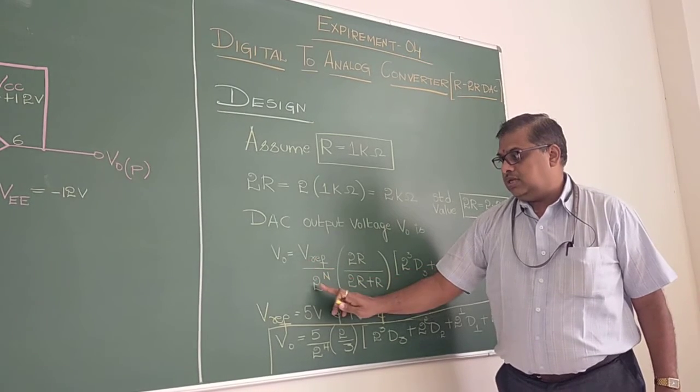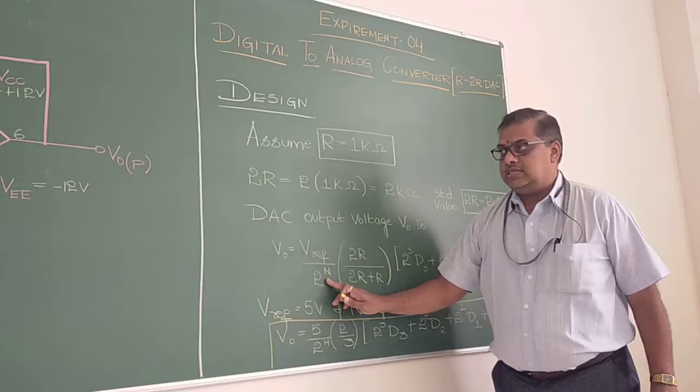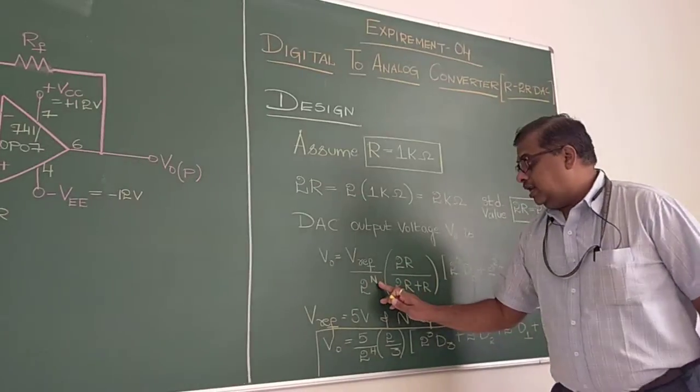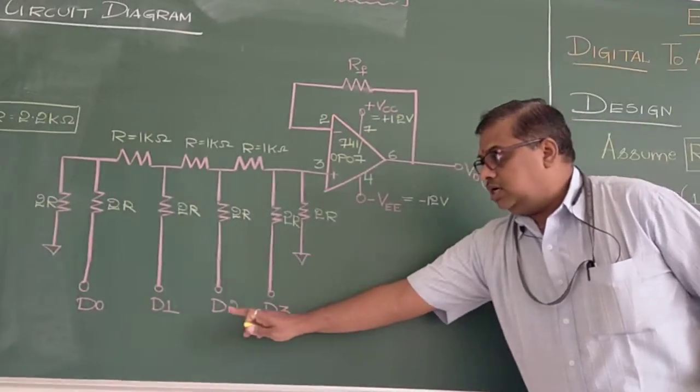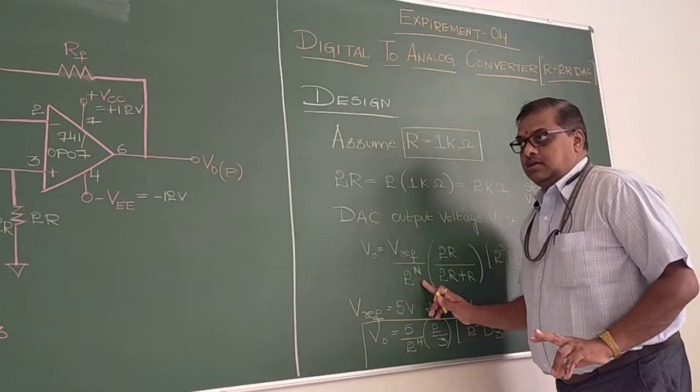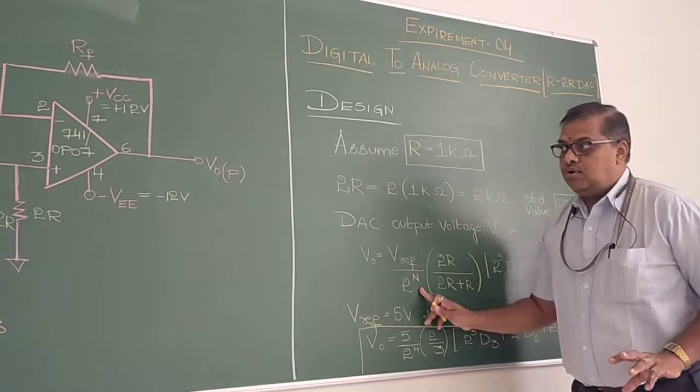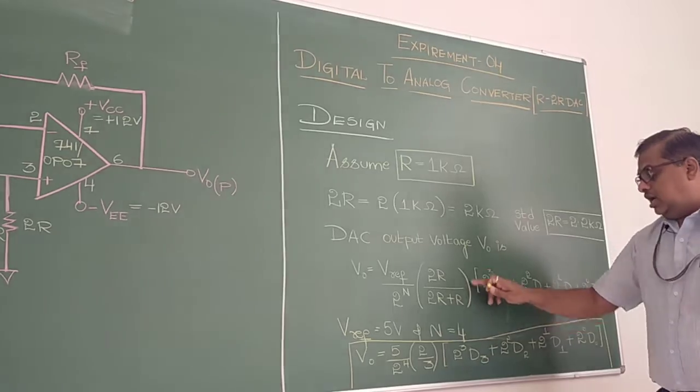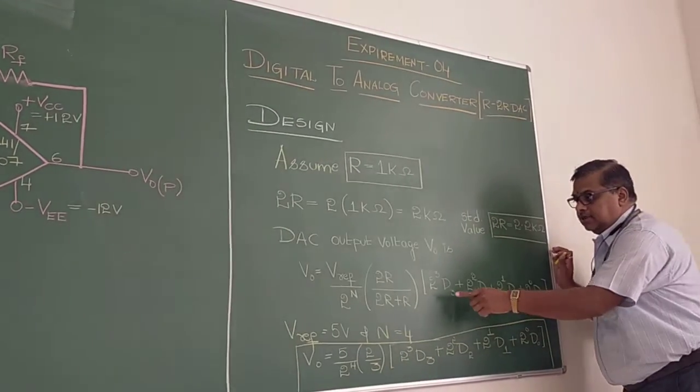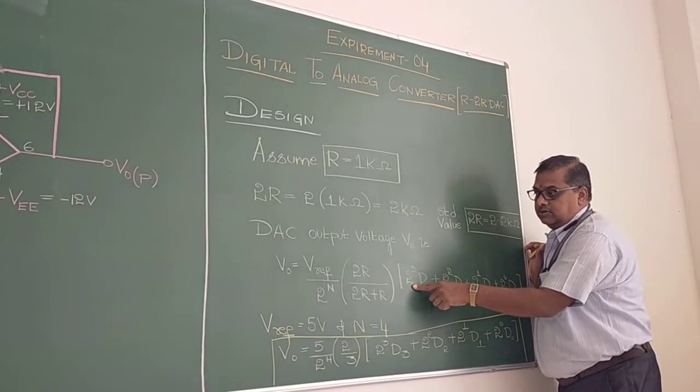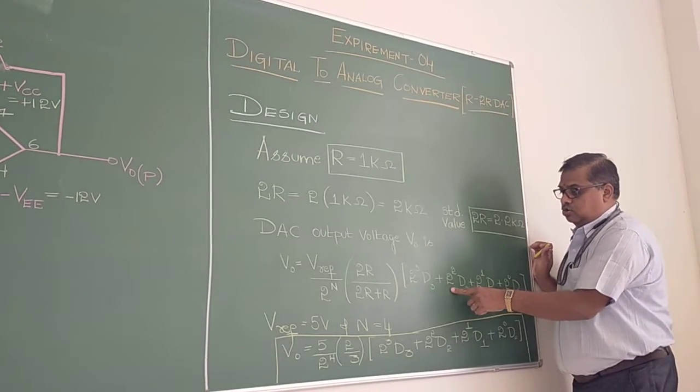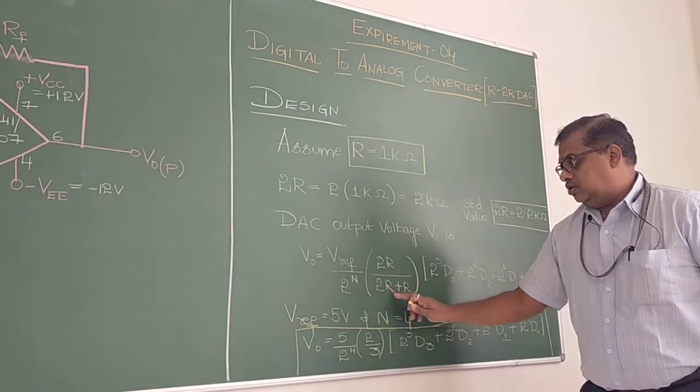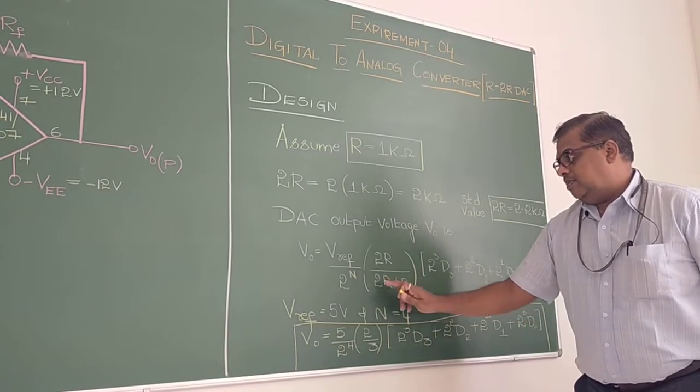The output voltage across pin number 6 is given by this equation. V0 is equal to V reference by 2 power n. What this 2 power n represents is the number of bits that we are connecting. Here as you can see we have 4 bits we are connecting, therefore I will take n to be 4. If I connect only 3 inputs D0, D1, D2, then it becomes 2 power 3. In our experiment we are connecting 4 inputs, therefore I am taking n to be 4, times 2R divided by 2R plus R.